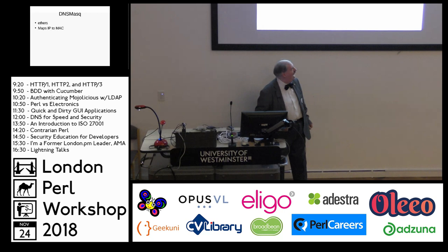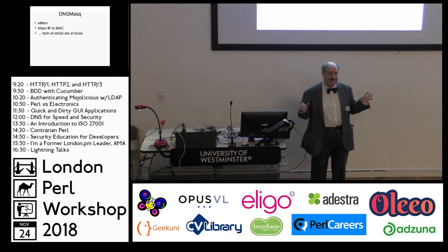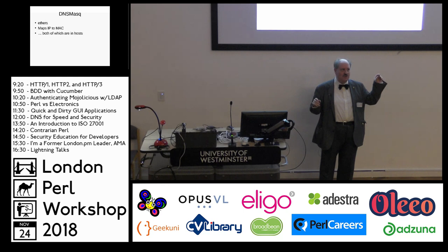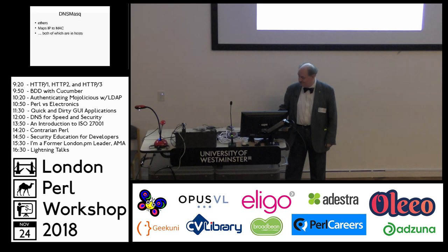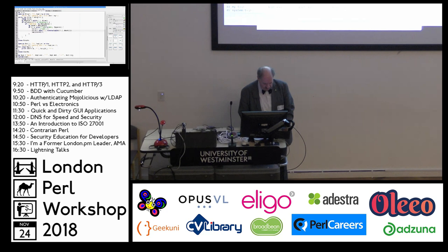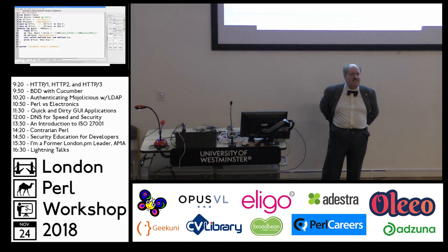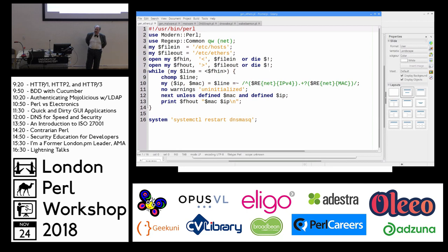I had already built up a hosts file mapping MAC addresses anyway, so to create the ethers file all I've got to do is read through the hosts file and sort out the MAC and IP addresses. There's a language for that — it's called Perl. The code looks something like that, all very simple and straightforward, no need for complicated test suites, and it just works. There's one little tweak: I'm using Regexp::Common, which knows that MAC addresses are separated by colons.